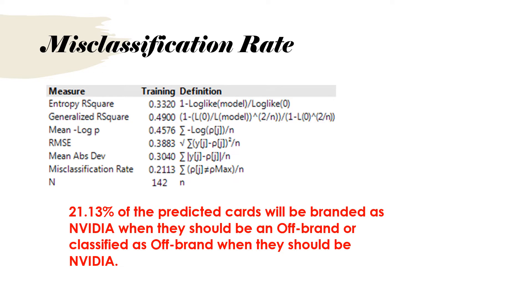The next part is the misclassification rate. You'll find that under measure and the value for the misclassification rate is 21.13%. So that does tell us the percentage of values predicted incorrectly. So in other words, 21% of these predictions were either said to be NVIDIA when they should have been an off-brand or classified as off-brand and they would have passed as NVIDIA.